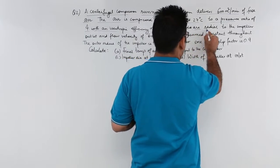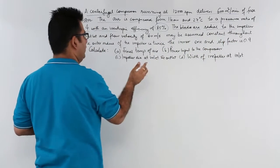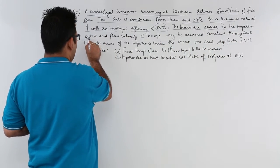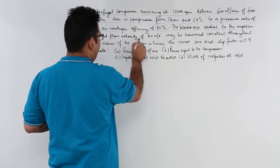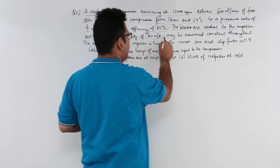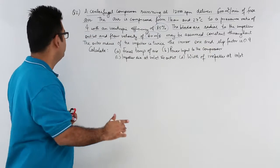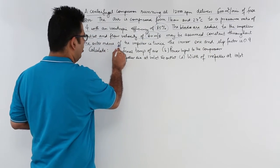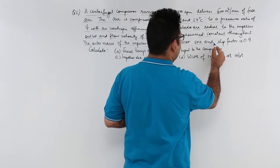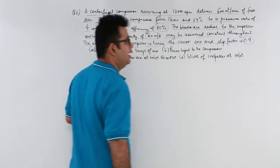The blades are radial to the impeller but outlet and flow velocity of 60 meter per second may be assumed constant throughout. So VF is constant. The outer radius of the impeller is twice the inner one and the slip factor is 0.9.